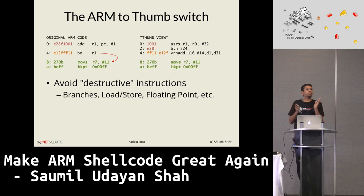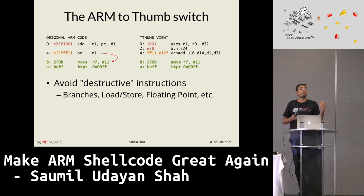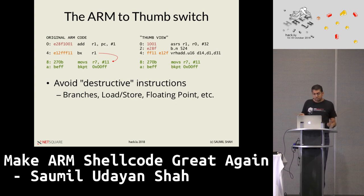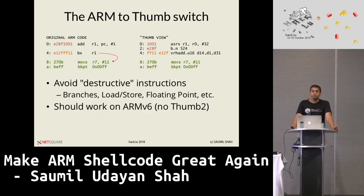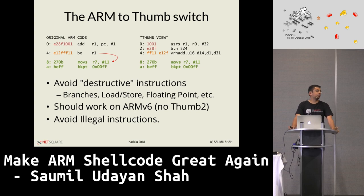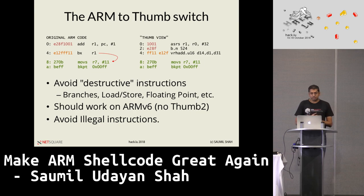The whole art of polyglotting relies on avoiding destructive instructions: no branches, no load/store because you might be loading from a memory address that doesn't exist or writing to memory that's not writable, no floating point instructions. The goal is that this should work on a Raspberry Pi 1 or some dumb IP camera which is an ARMv6 core. So we do not want thumb-2 instructions — the lowest possible denominator. And of course, no SIGILL, no illegal instructions. You've got to play around with ARMv6 decoding.